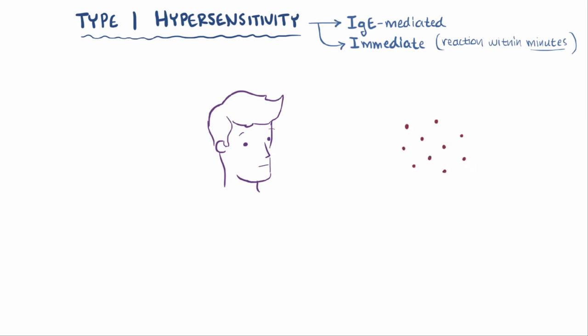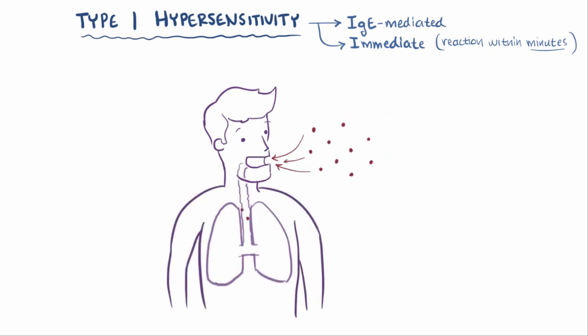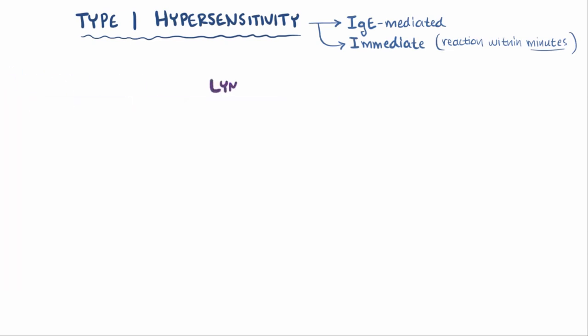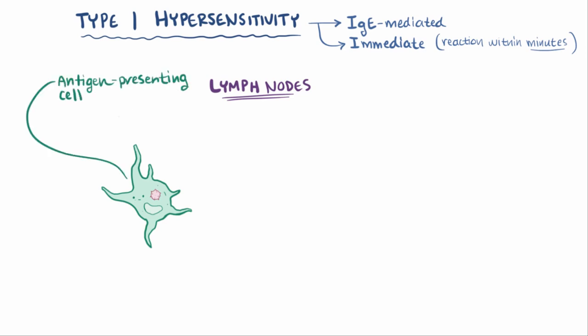Let's say this person breathes in some ragweed pollen. That person happens to have T helper cells that can bind to a specific molecule on the pollen, making that molecule an allergen. First off, that allergen gets picked up by immune cells hanging out in the membranes along the airways, which then grab the molecule and migrate to the lymph nodes. These cells are antigen-presenting cells, since they carry the antigen to the lymph nodes and present it to the T helper cells living there. Dendritic cells and macrophages are examples of antigen-presenting cells.